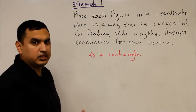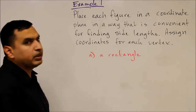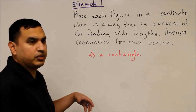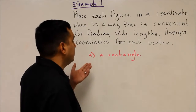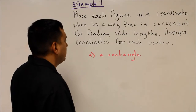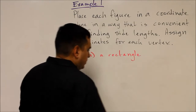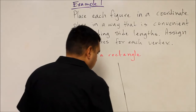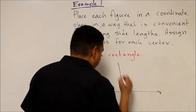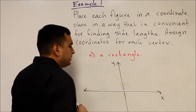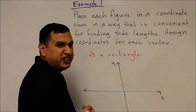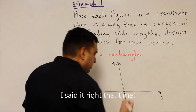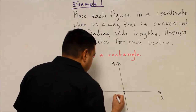Example one is going to introduce coordinate proofs by talking about the best way to put a shape into a graph so we can find the different side lengths. The first shape is a rectangle. We want to draw a coordinate plane with an x and a y axis. For any of these shapes, the best way to start is to place one vertex at the origin, at (0, 0).